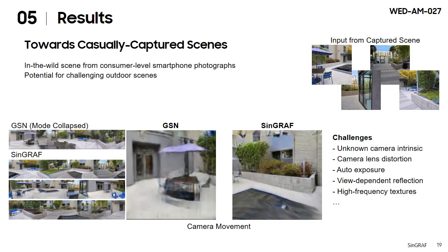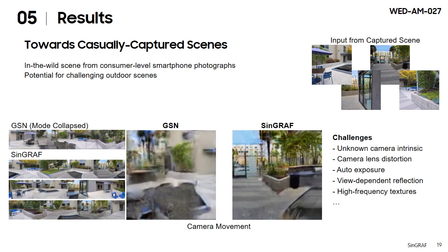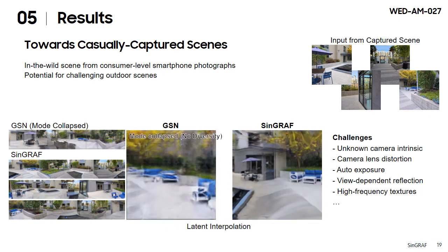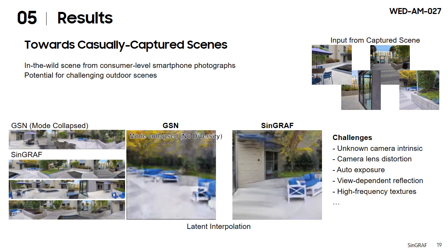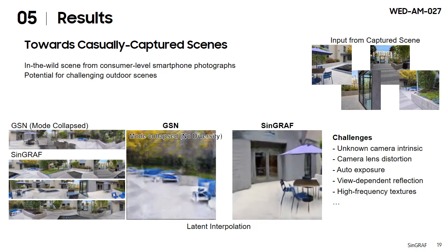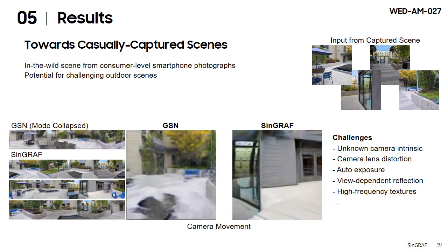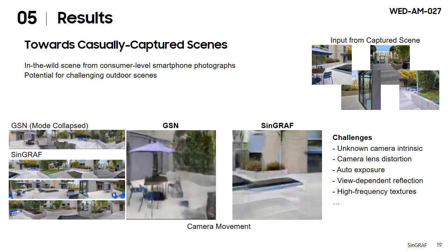We further test our method with casually captured photographs of an outdoor setting using a consumer-level smartphone. This scene is challenging because of its many features, but our model successfully generates variations with visually pleasing quality. This demonstrates the potential of Scene Graph to be applied in the wild.